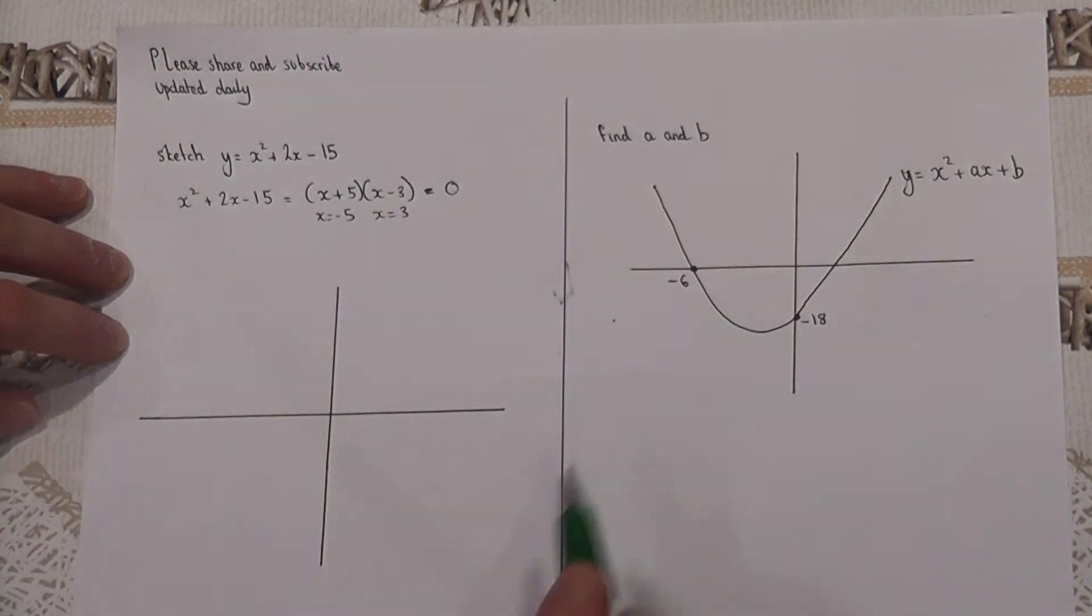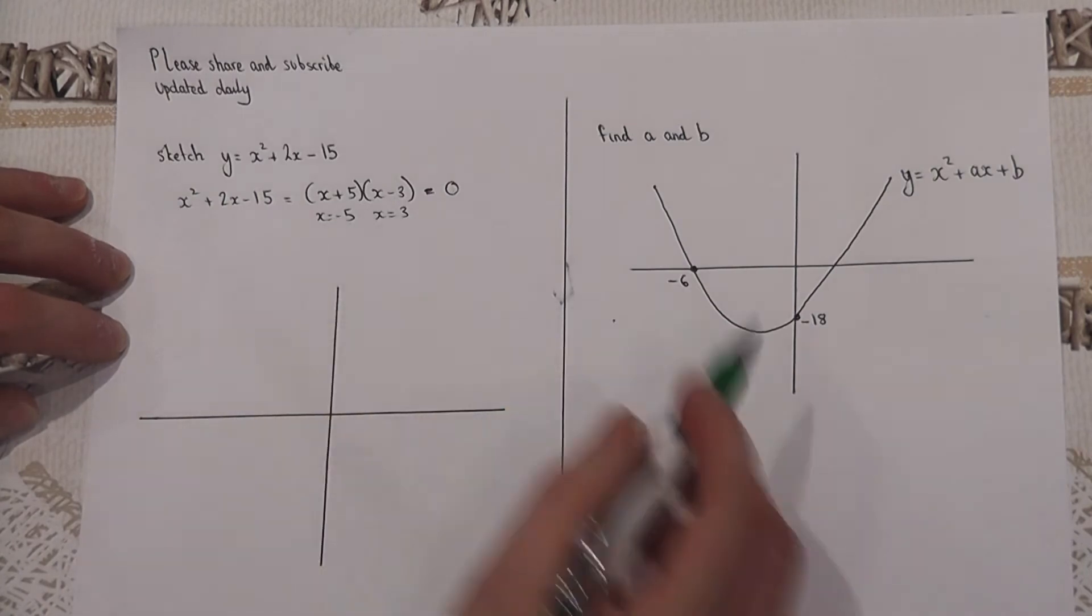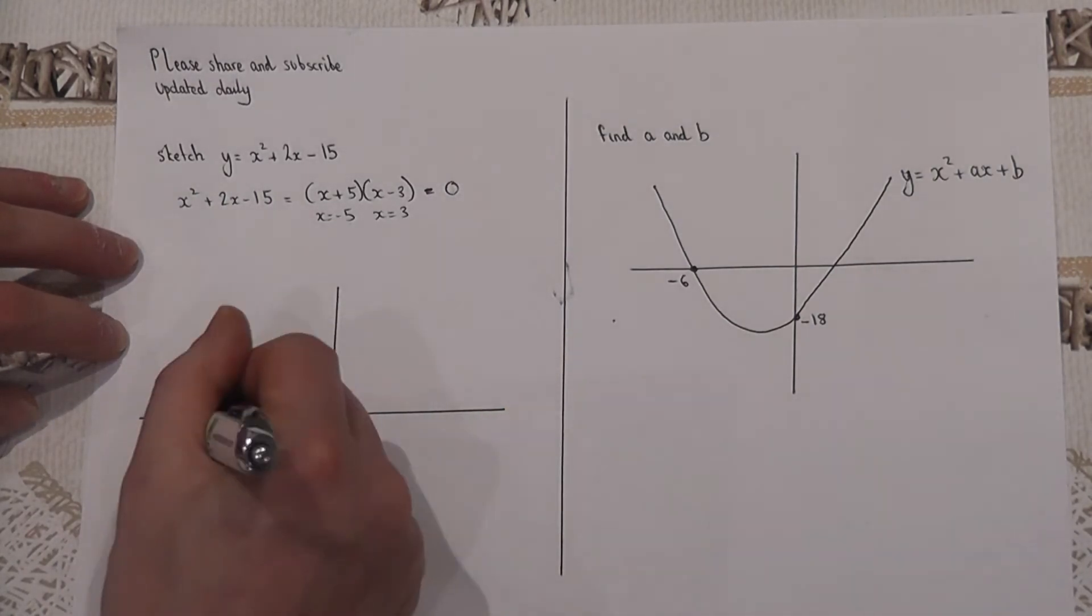Now these two values are where the graph hits the x-axis, so on a sketch we have minus five and positive three.